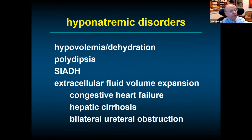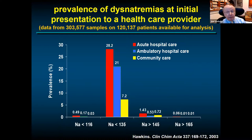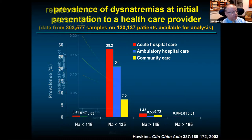We'll start with hyponatremic disorders, and the bulk of this talk will focus on hyponatremia, as it's the most common electrolyte disorder you will encounter. In a one-year study from Singapore of 120,000 patients, 30 percent of acute hospitalized patients were hyponatremic. Even in ambulatory and community care, incidence ranges between 7 and 21 percent. At Georgetown, 10 to 20 percent of hospital beds have patients with hyponatremia at any given time.